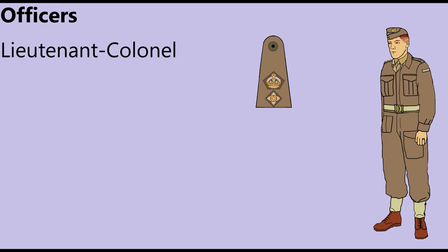In September 1940, new rank stars and crowns were adopted to better distinguish officers from other ranks. The badges featured colored backings representing the different branches. It was the first of many regulations that gradually introduced a full range of color insignia to the battle dress uniform by 1943.